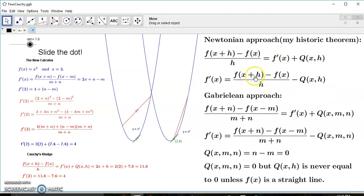Whereas over here you always have a problem because Q(x,h), which is the difference between the non-parallel secant line and the tangent, is never zero unless of course f is a straight line.